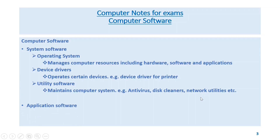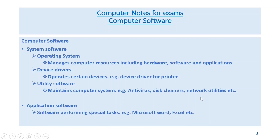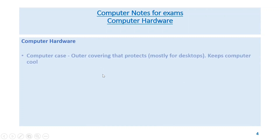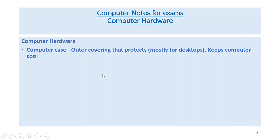Utility software maintains the computer system — examples include antivirus, disk cleaners, network utilities, etc. Application software performs special tasks — examples include Microsoft Word, Excel, etc.